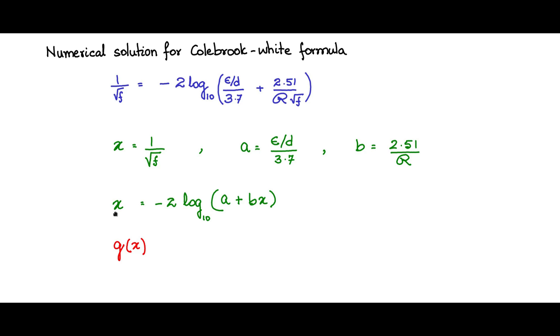Let us say g of x is equal to x plus this one. We will take x plus this onto the left hand side which will make it 0. So that is the function g of x, x plus 2 log base 10 a plus b x, and we know that this should become 0.